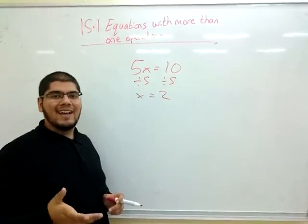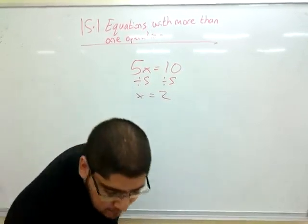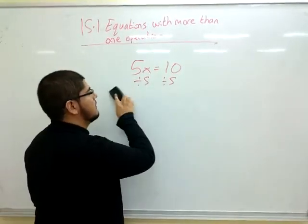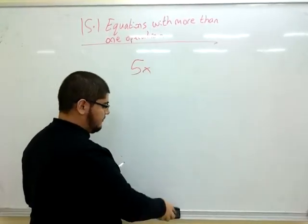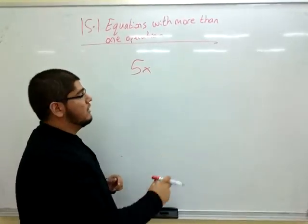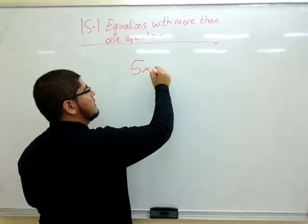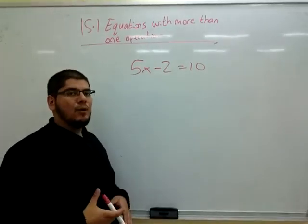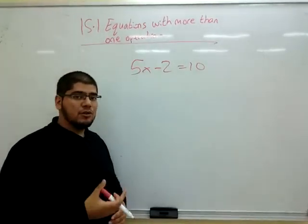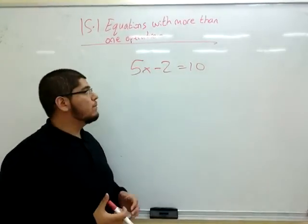Now we're going to add a second operation. Let's say I have the same equation, I'm adding one more operation, so 5x subtract 2 equals 10. Now I have two operations I need to undo to find x.